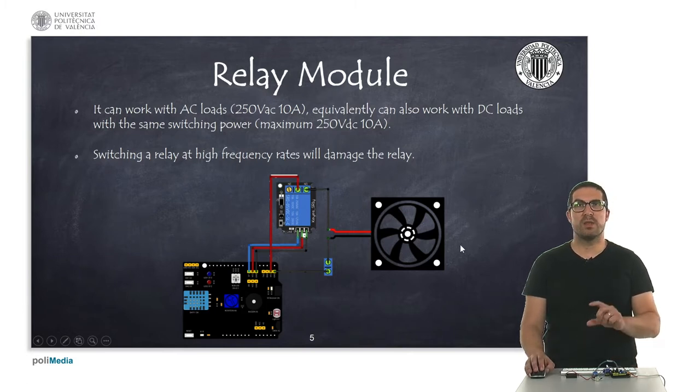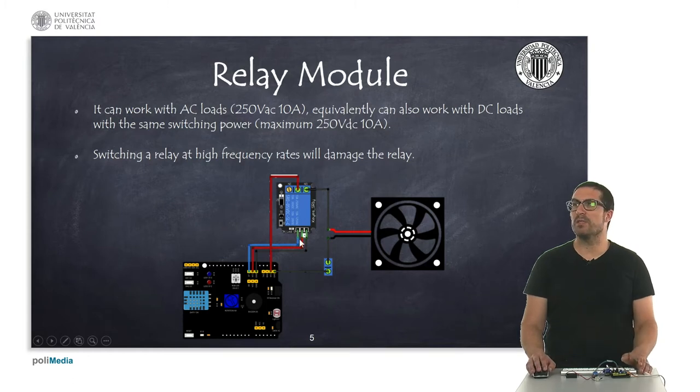So we have to control processes with them. They require slow switching conditions, let's say like temperatures, so we need to activate the fan, things like that. If we switch the relay very high, we can damage the module, the coil that the relay has. So just for you to consider.